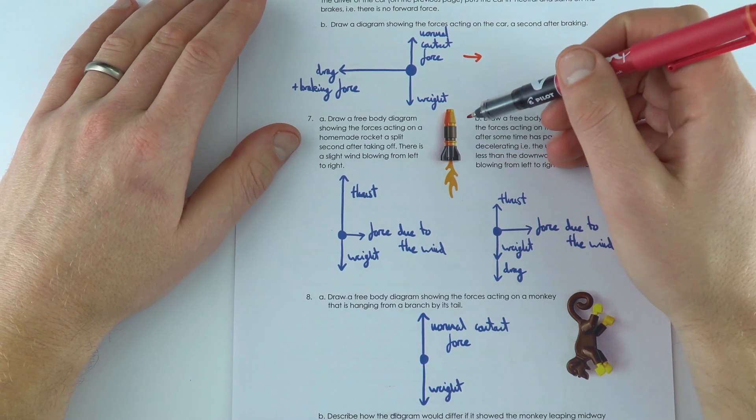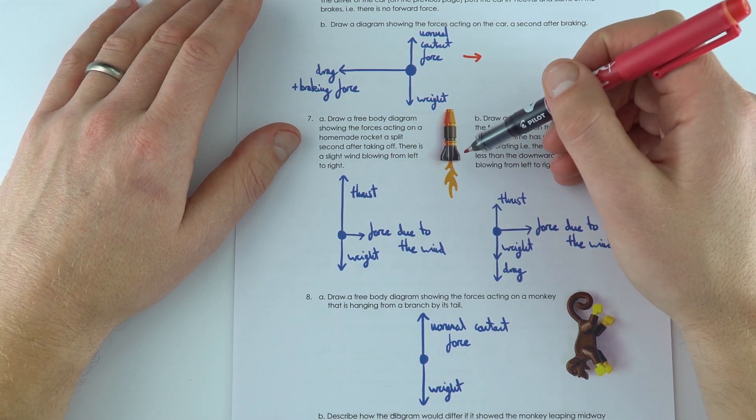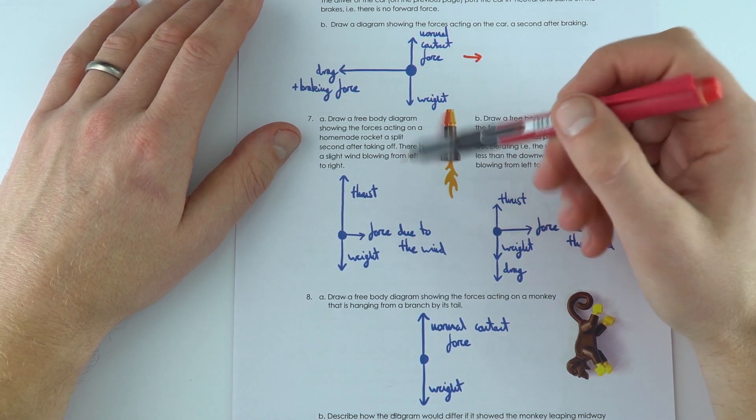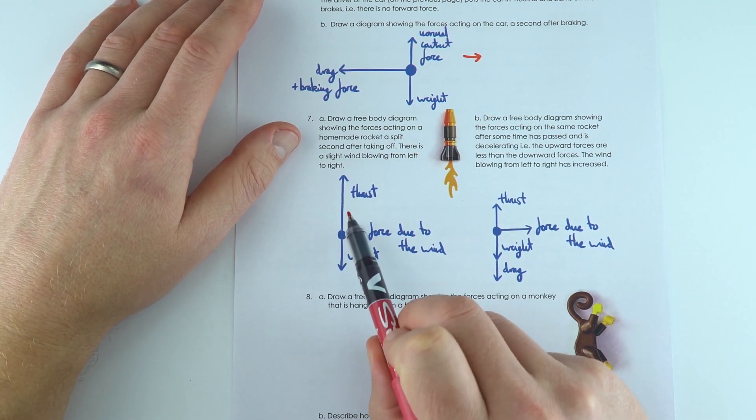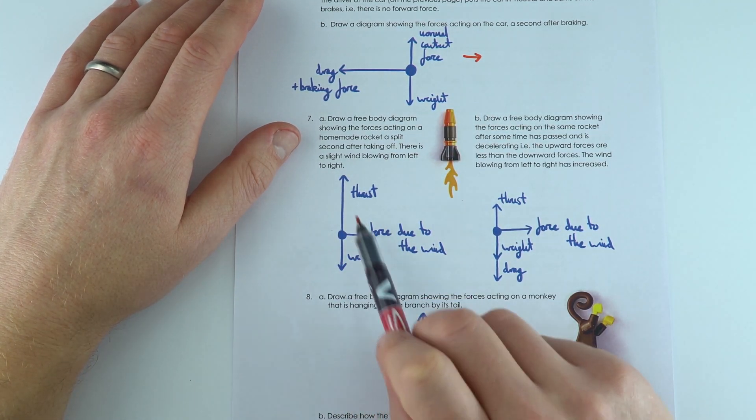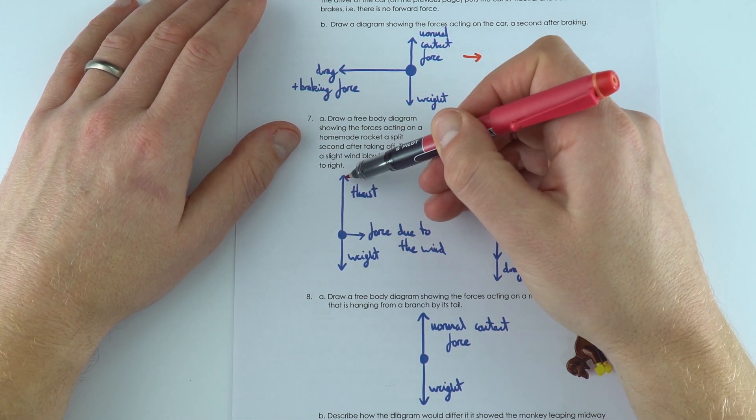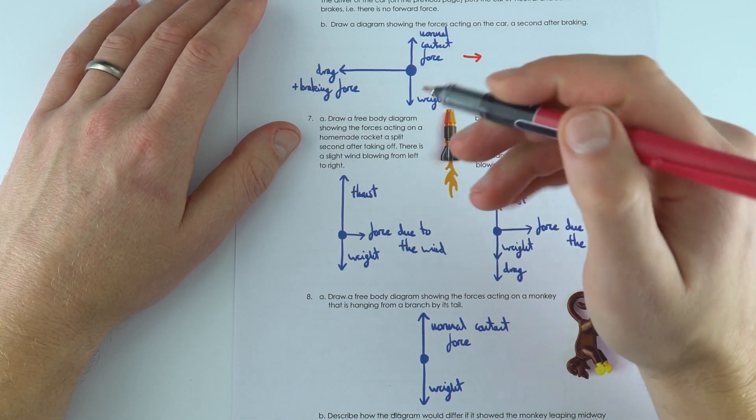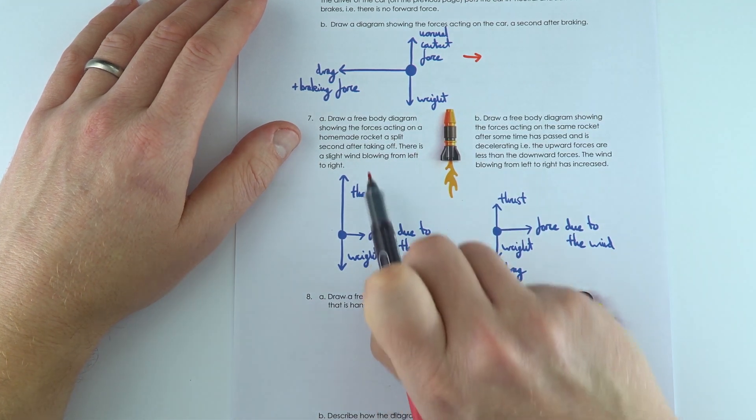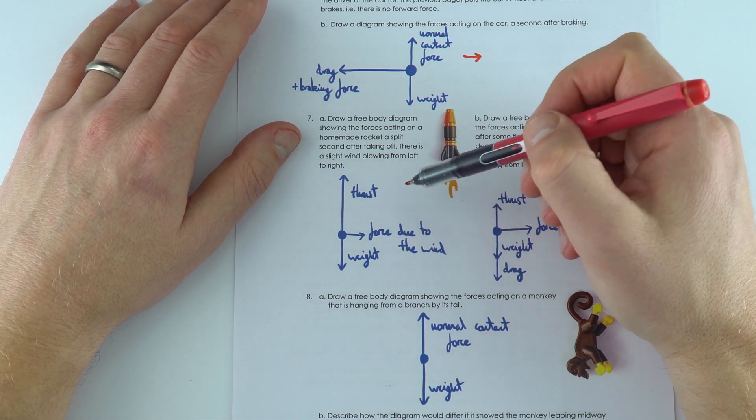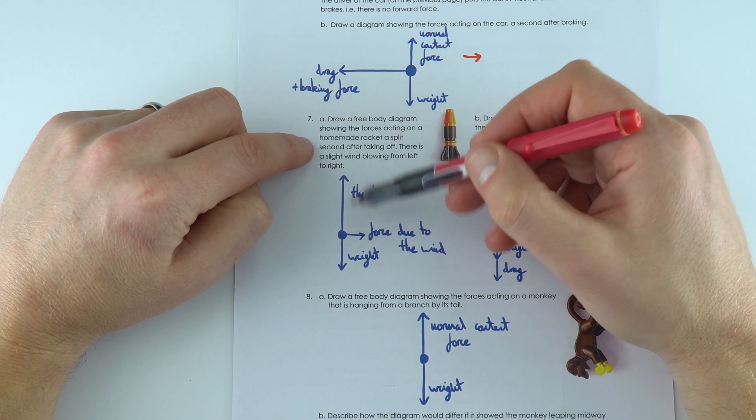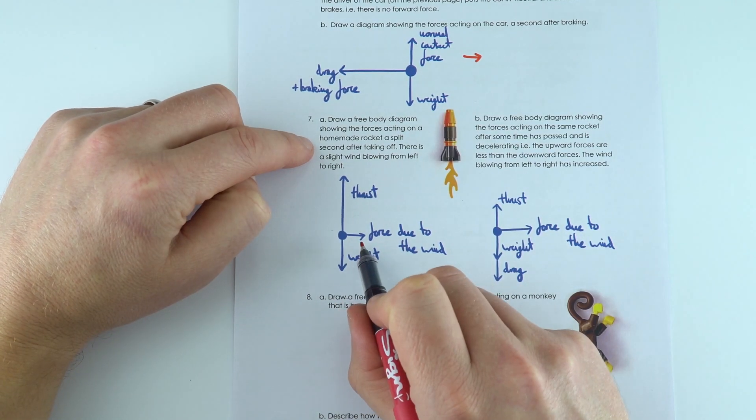Now this one over here, we've got a rocket which has been launched into the air. Initially, again, the exact size doesn't really matter of the arrows, but the important thing is that the thrust upwards is bigger than the weight, and that means there's going to be a resultant force up. That means the rocket is still going to be accelerating, and there's a small force to the right due to the wind.